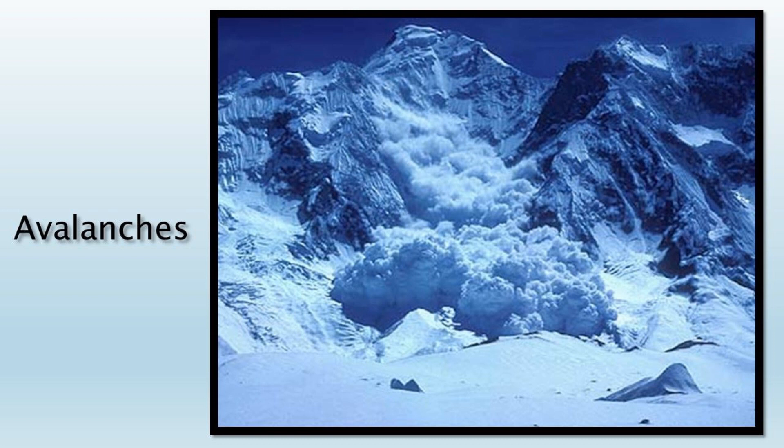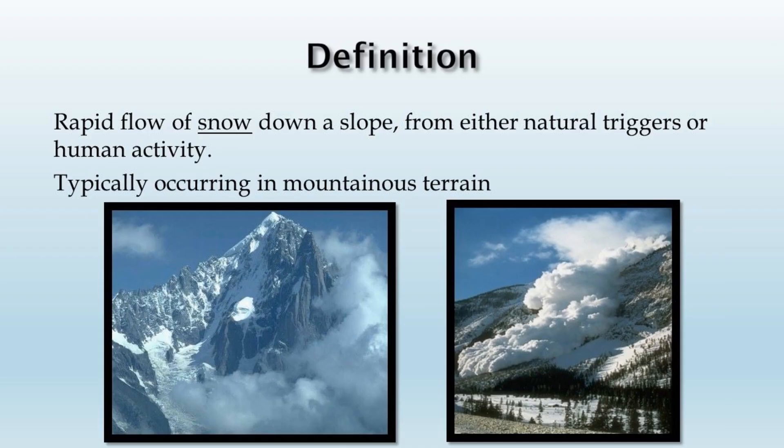Hello everyone. In this video we're going to be looking at avalanches. We're going to be studying how they're formed and also some of the effects that they have. Avalanches typically occur in mountainous terrain. And as a definition, they're classified as rapid flows of snow down a slope from either natural triggers or human activity.